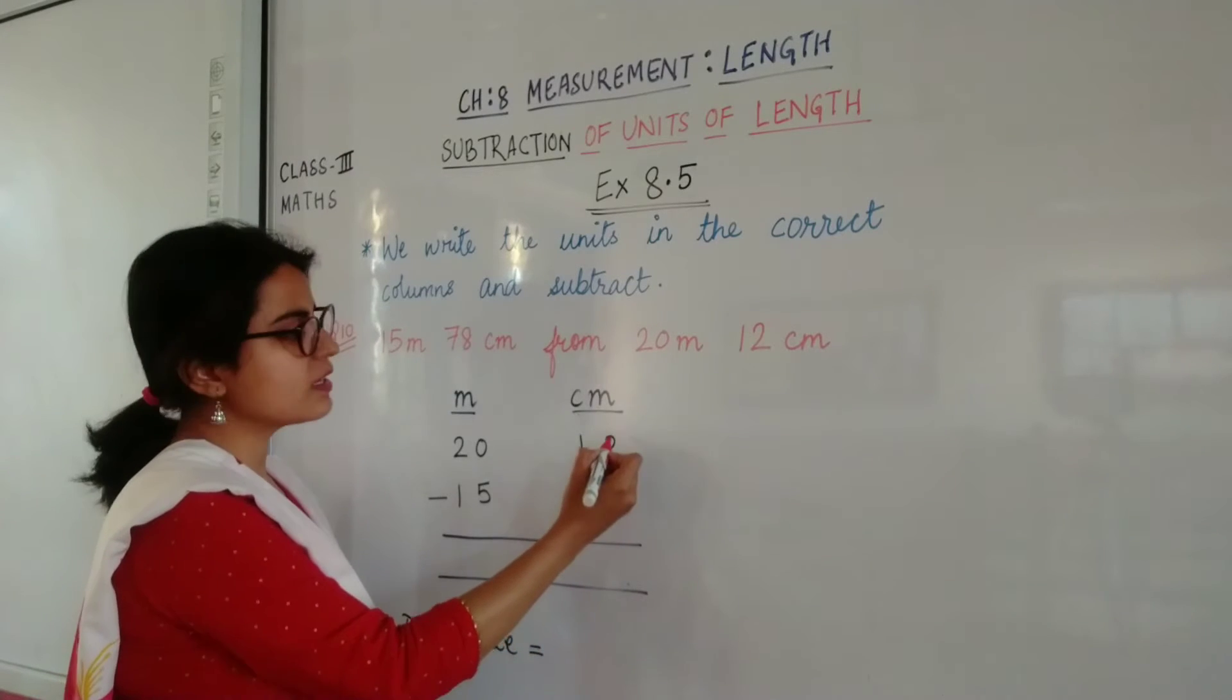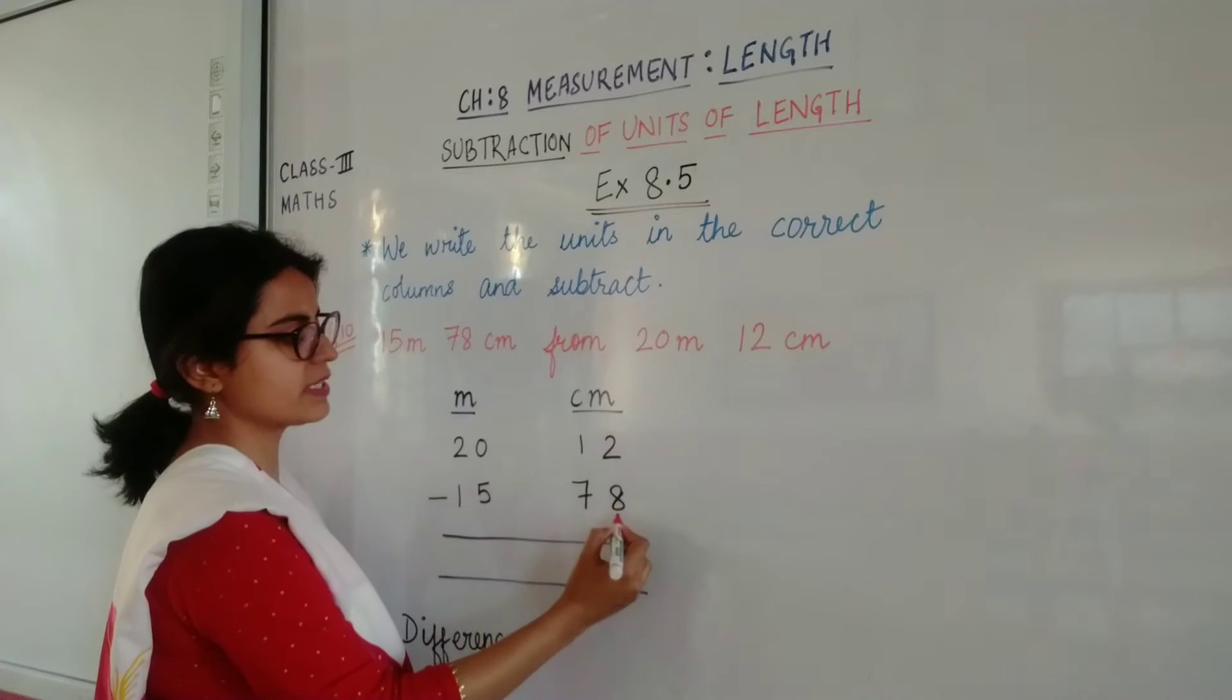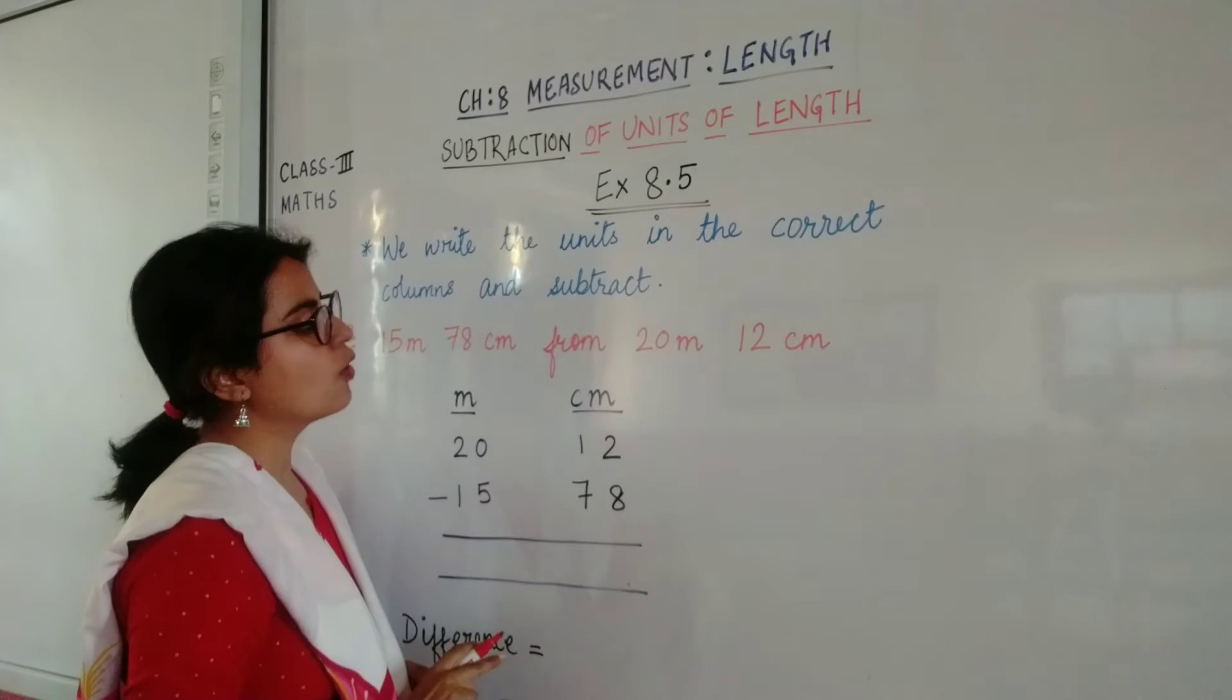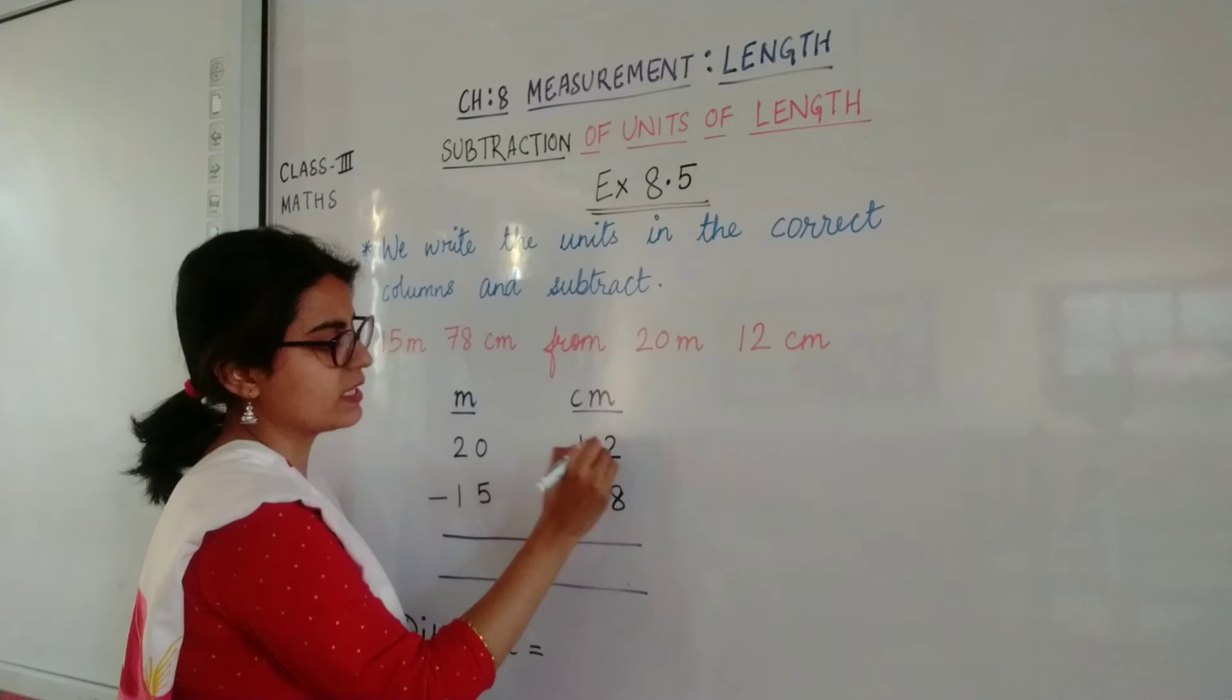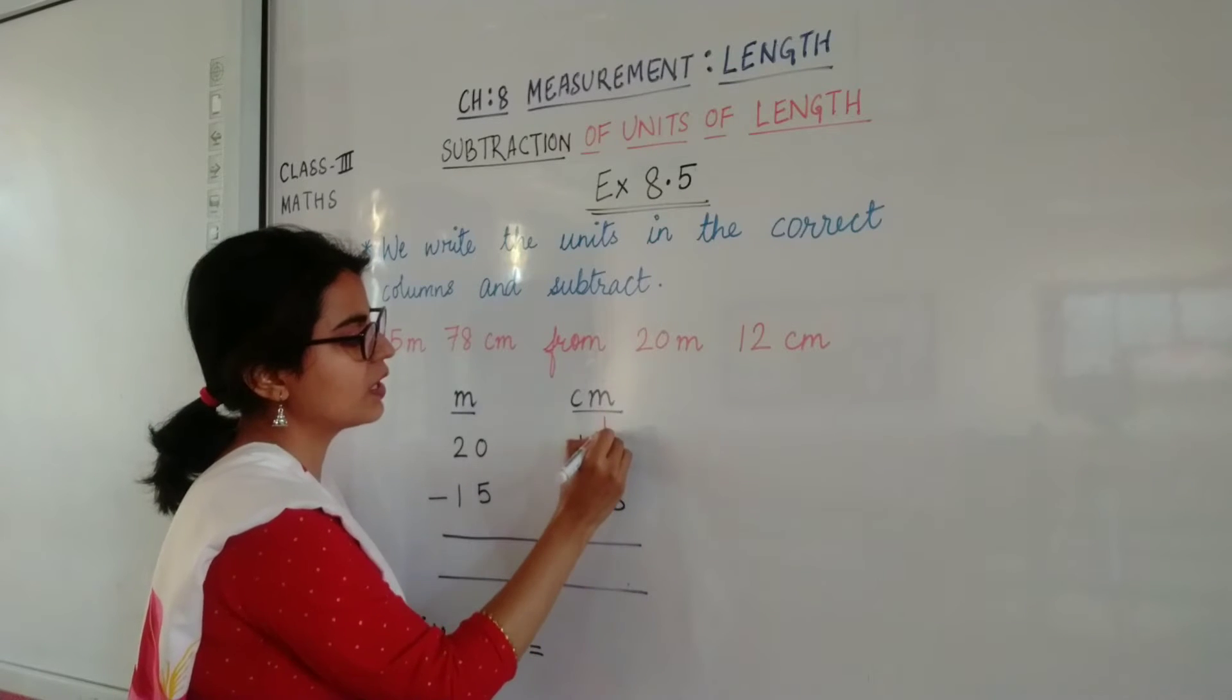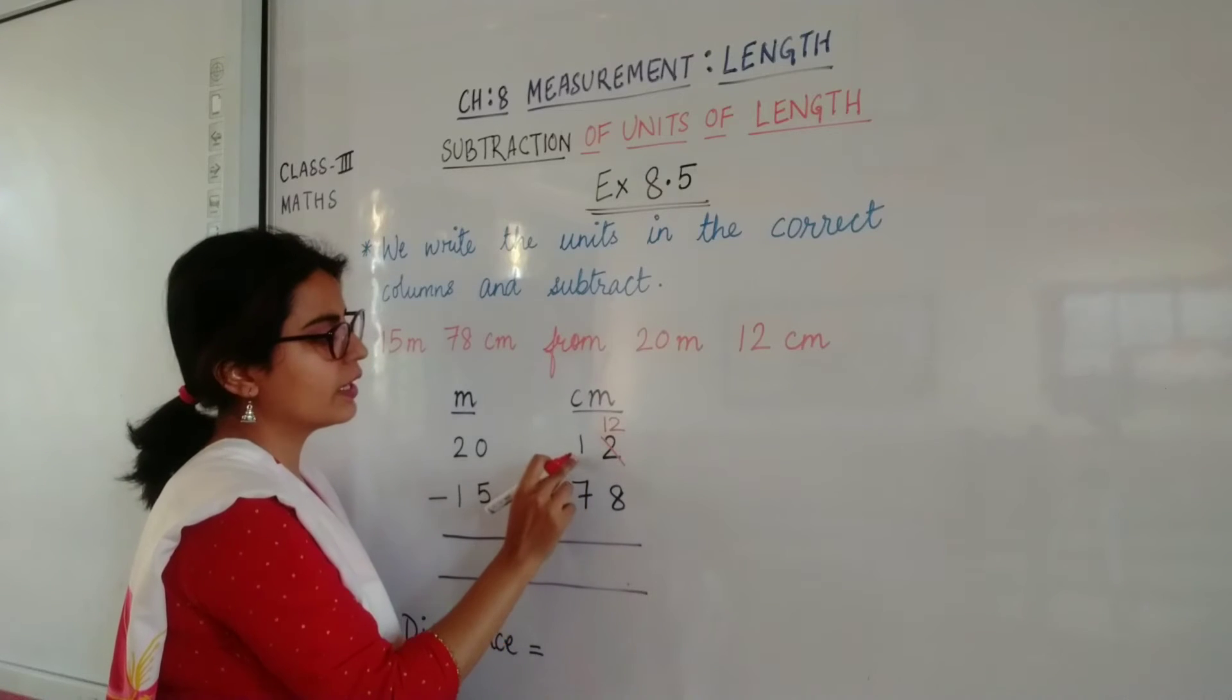So children, we start from the centimeters column. The first number is 2 minus 8, not possible. What do we do? The 2 borrows 1 tens from here and becomes 12. Now that it gave 1 tens to 2, it was supposed to be 11.